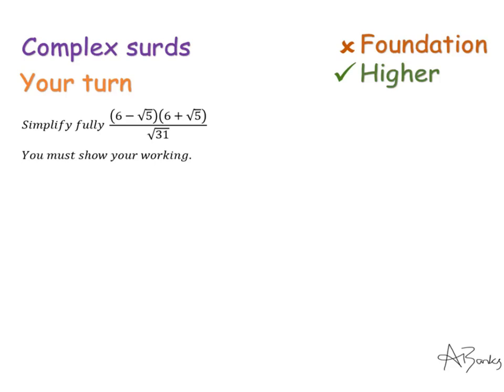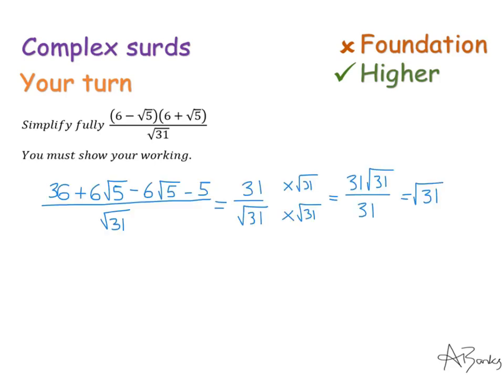Here's a very similar question that appeared on a different exam paper. Simplify fully this expression (6 - √5)(6 + √5) / √31. It doesn't tell you what answer you're aiming for this time, it's not a show that question, but it's the exact same process. If you pause the video now you can unpause it when you're ready to see the solution. Here's a solution. So you might have been able to guess that the answer would be √31, although it wouldn't necessarily be with these questions. But this is very similar to the last one, so the answer is √31. Thank you for watching.